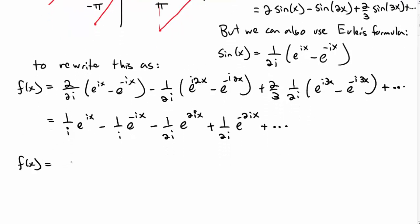Let me write this in a more abstract way. I could write that as c₁, some coefficient c₁ times e^(ix), c₋₁ e^(-ix), c₂ e^(2ix), c₋₂ e^(-2ix). And you see the pattern.